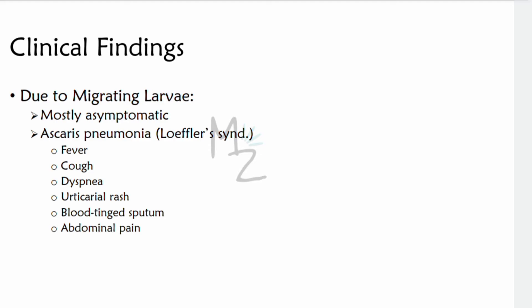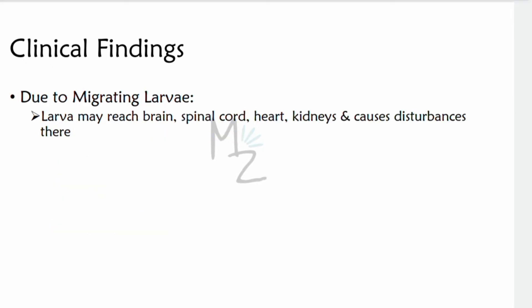Clinical findings may occur due to migrating larvae and the presence of adult worms. Most infections are asymptomatic. Ascaris pneumonia, in which Löffler's syndrome occurs, is a disease where eosinophils accumulate in the lung in response to parasitic infection, presenting with fever, cough, and eosinophilia. With a heavy larval burden, it can also cause dyspnea, urticarial rash, blood-tinged sputum, and abdominal pain. Larvae may also reach the brain, spinal cord, heart, and kidneys, causing disturbances there.